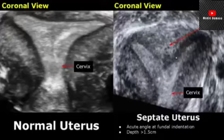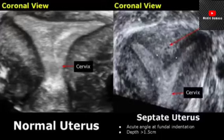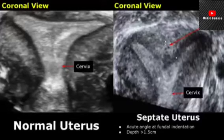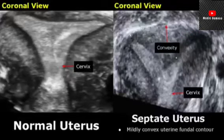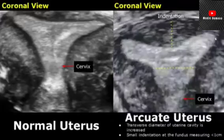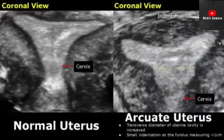In the septate uterus, there is an acute angle formed at the fundal indentation, with a depth greater than 1.5 centimeters. The uterine fundal contour is convex or flat. An arcuate uterus is the least serious type of congenital uterine abnormality.